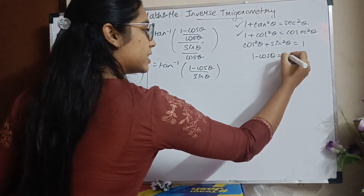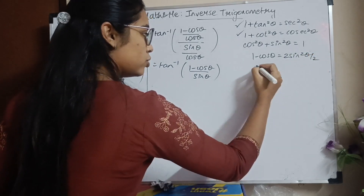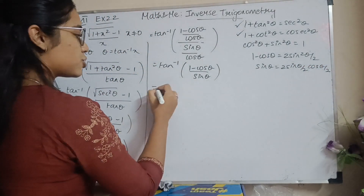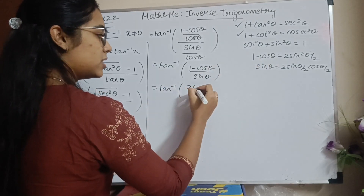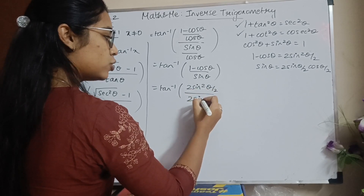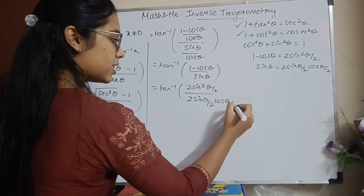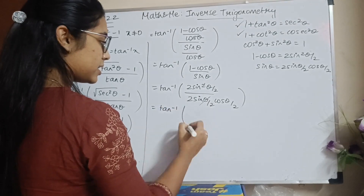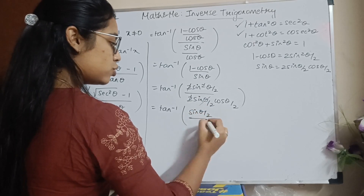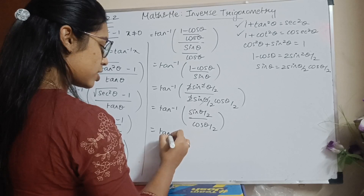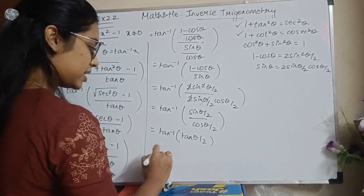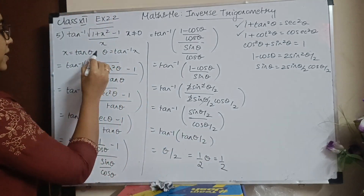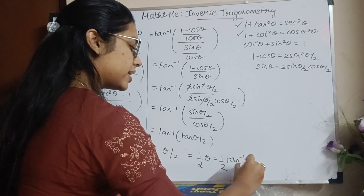Using half-angle identities: 1 - cosθ = 2sin²(θ/2) and sinθ = 2sin(θ/2)cos(θ/2). So we have tan⁻¹[2sin²(θ/2) / (2sin(θ/2)cos(θ/2))]. One factor of sin(θ/2) and the 2s cancel, leaving tan⁻¹[sin(θ/2)/cos(θ/2)] = tan⁻¹(tan(θ/2)) = θ/2. Since θ = tan⁻¹(x), the answer is (1/2)tan⁻¹(x).